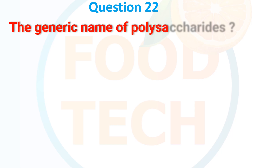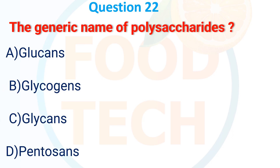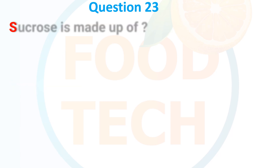Question 22: The generic name of polysaccharide — A. Glucan, B. Glycogen, C. Glycan, D. Peptosin. The answer is C. Glycan.